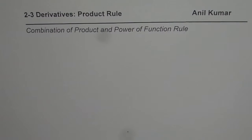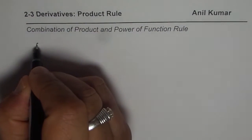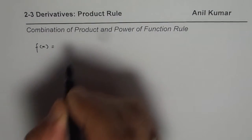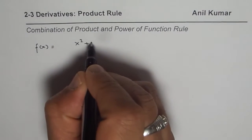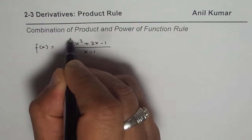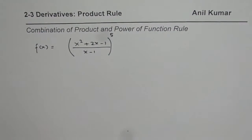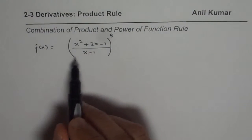I am Anil Kumar and in this video we will learn how to find the derivative of a function with the help of a combination of the product rule and the power rule. Let me take one example: f(x) equals x squared plus 2x minus 1 divided by x minus 1, all to the power of 5. How are you going to find the derivative of this function?